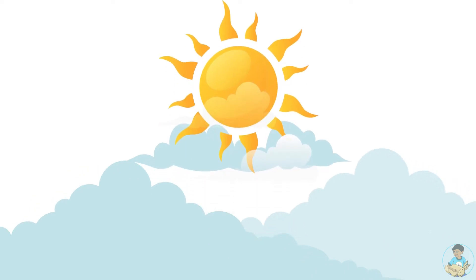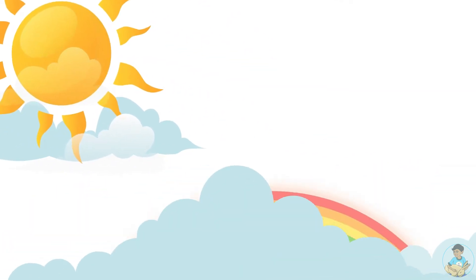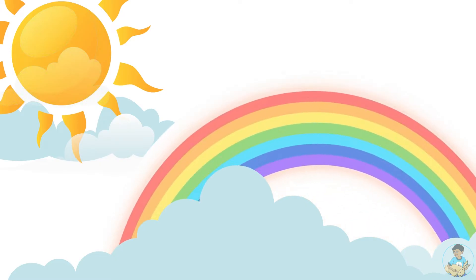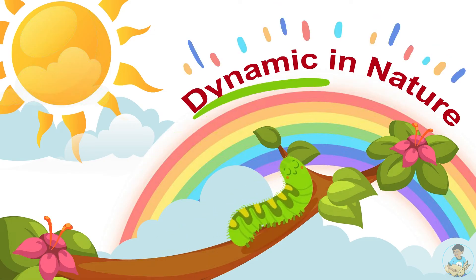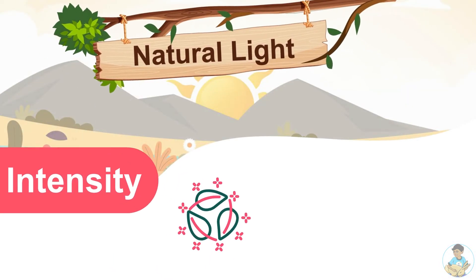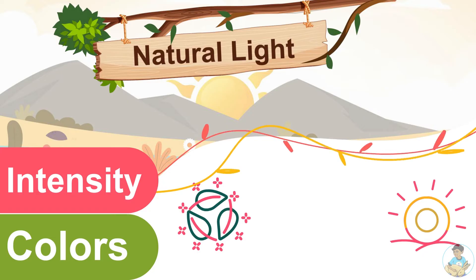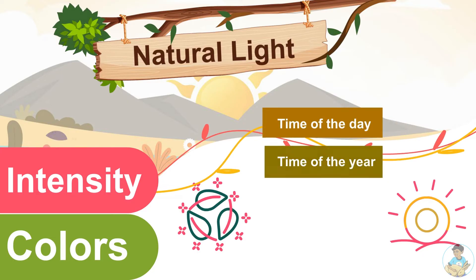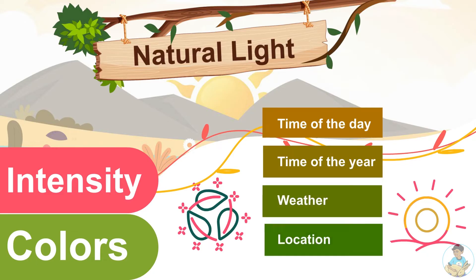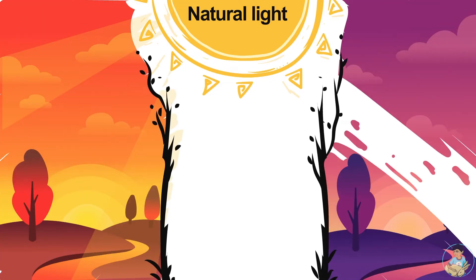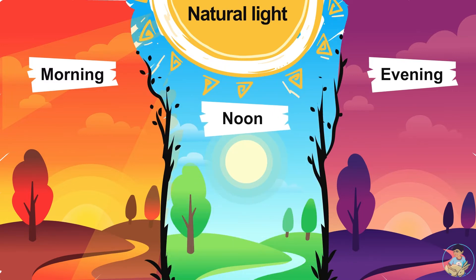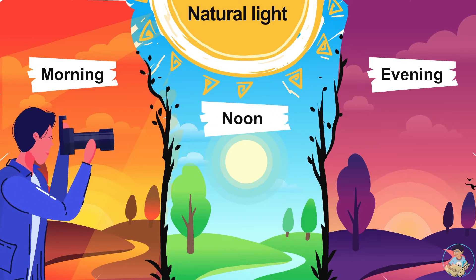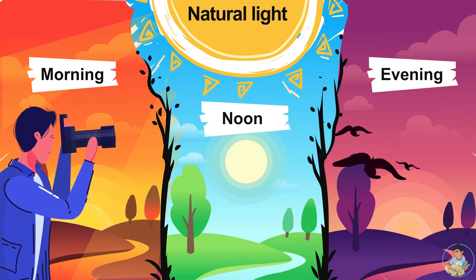Natural light is a full-spectrum light — in simple language, it has all the colors of the rainbow. Also, natural light is dynamic in nature. The intensity and color of light, that is its wavelength, changes with the time of day, time of year, weather, or even the location on Earth. Natural light is more on the orange-red side during mornings and evenings, but appears bluish during the afternoon. This dynamic nature of light must be considered in advance when planning to take your photograph.